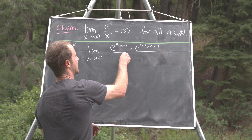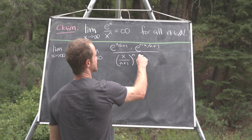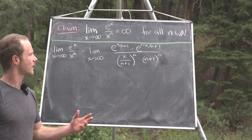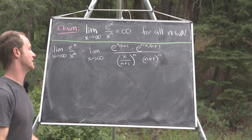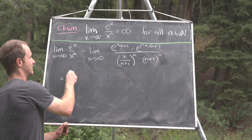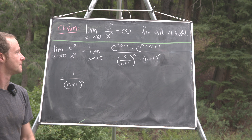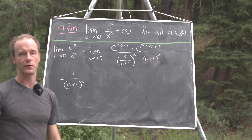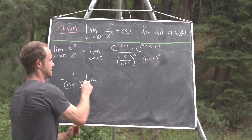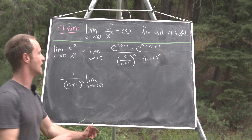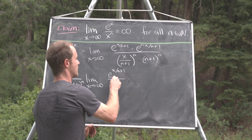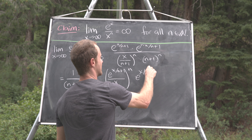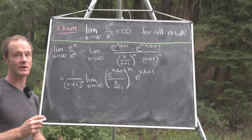The second trick is writing the denominator as x over n plus 1 to the n times n plus 1 to the n — notice those factors of n plus 1 cancel. Now let's group terms and bring some things out of the limit. We can bring outside of the limit the factor 1 over n plus 1 to the nth power. The remaining terms inside are both to the nth power, so using exponent rules we rewrite them as the limit as x goes to infinity of e to the x over n plus 1 over x over n plus 1, all to the nth power, times e to the x over n plus 1.